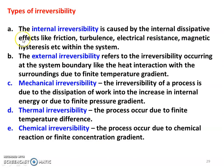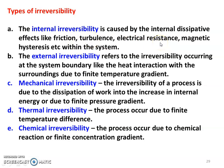Types of irreversibility: internal irreversibility, external irreversibility, mechanical irreversibility, thermal irreversibility, and chemical irreversibility. Internal irreversibility is caused by internal dissipative effects like friction, turbulence, electrical resistance, and magnetic hysteresis within the system. When there is friction, turbulence, or electrical resistance, the flow process becomes irreversible.